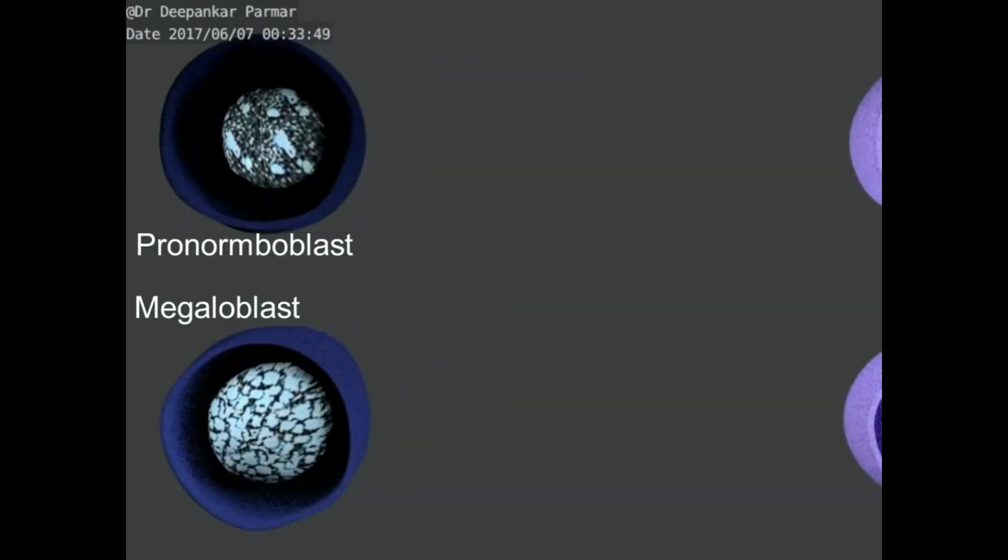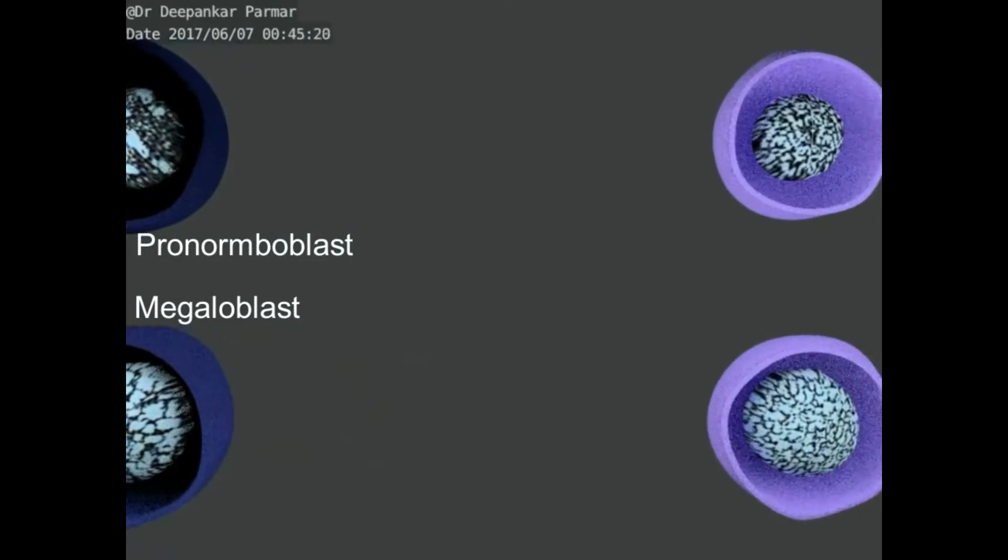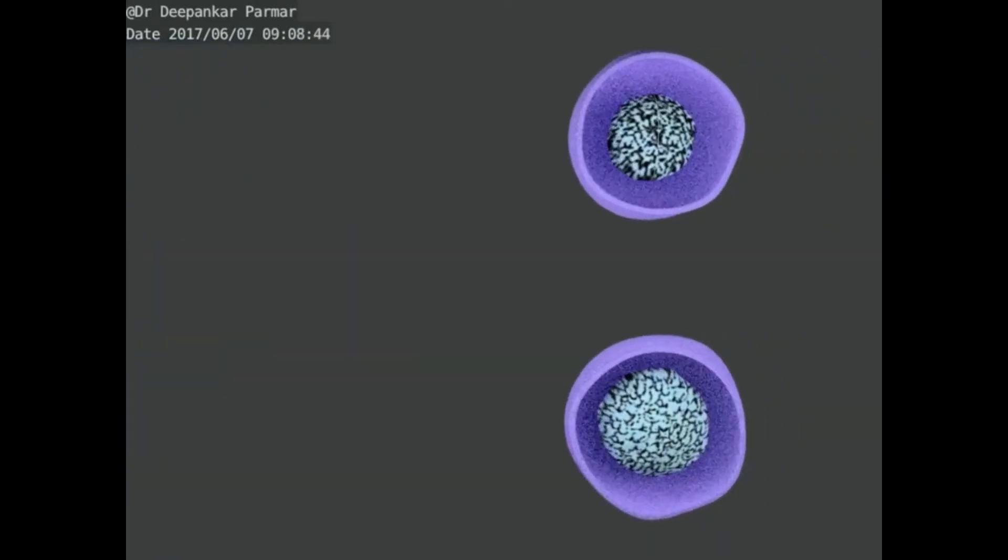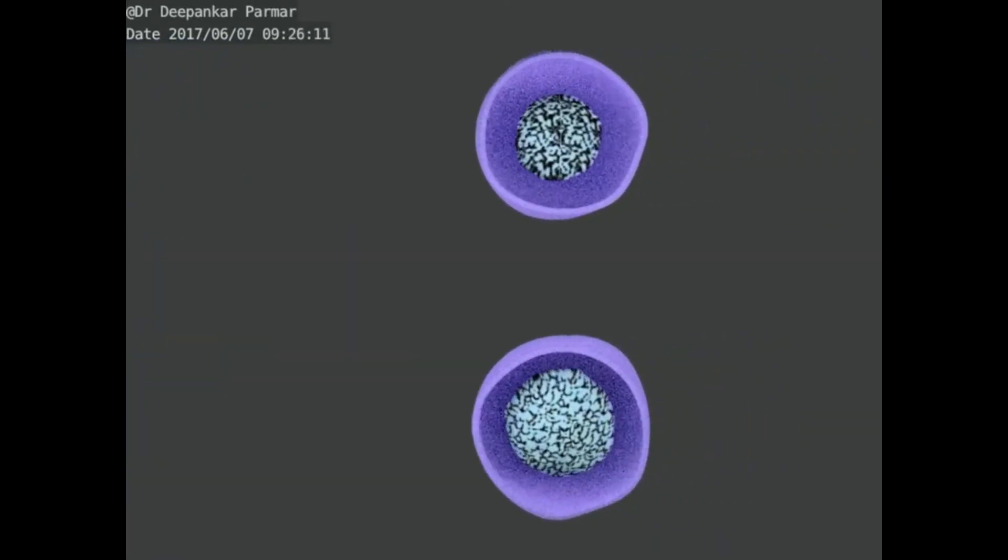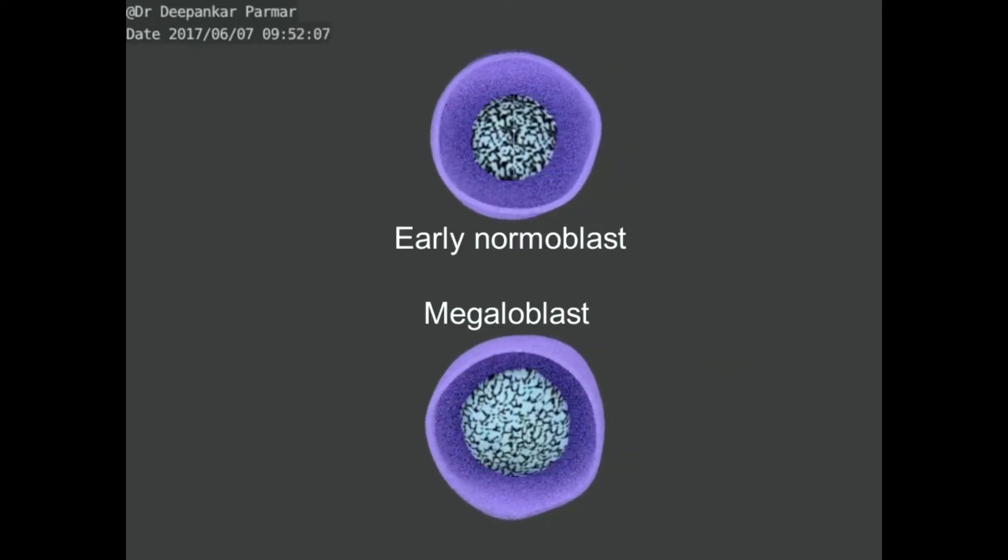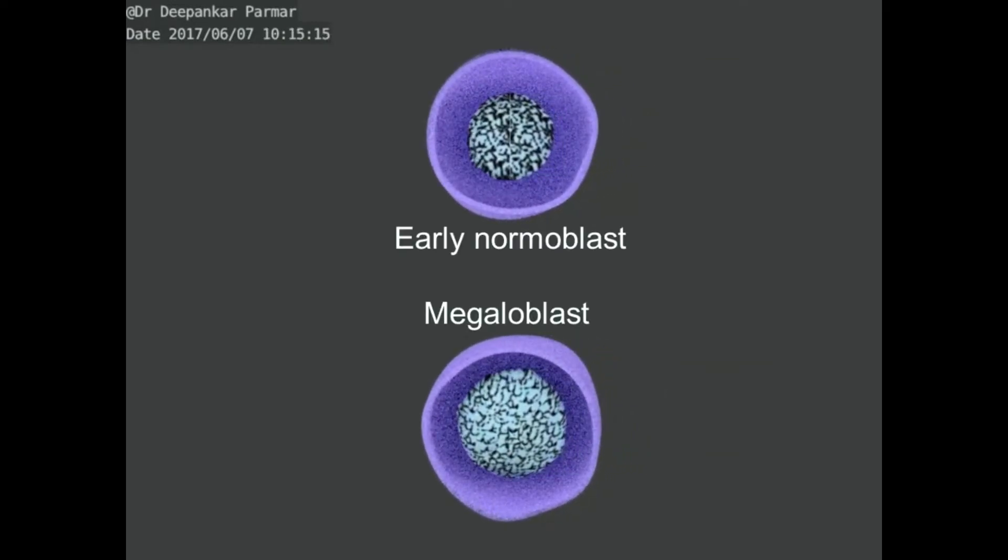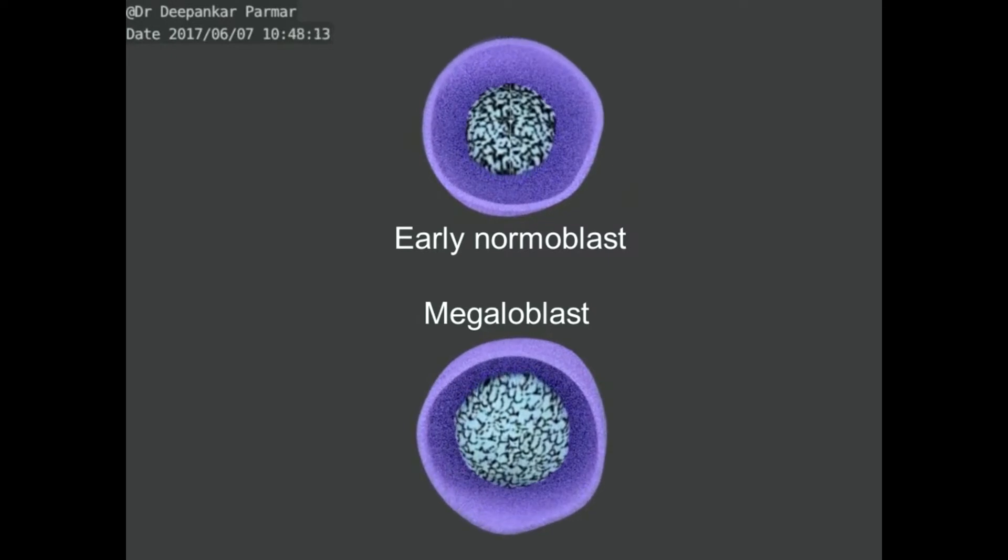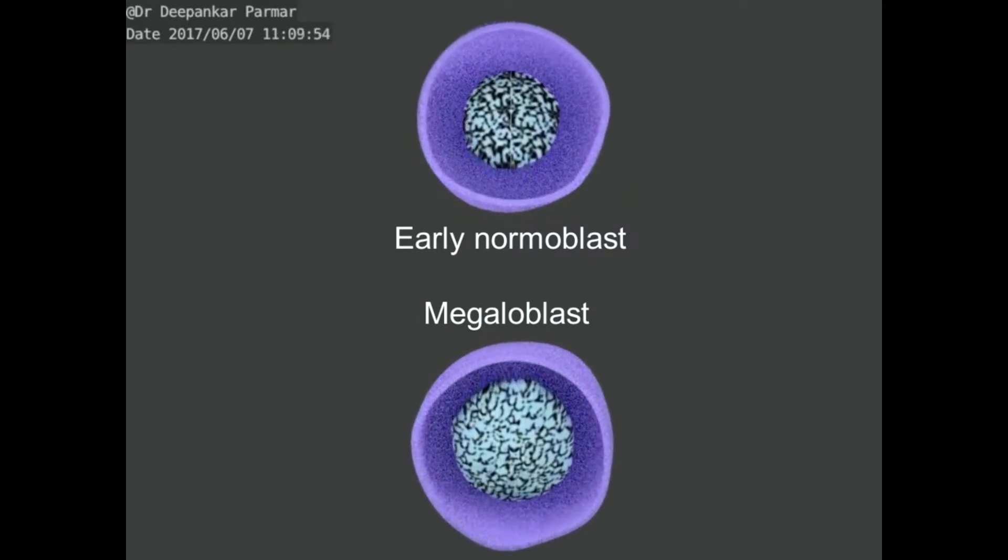Now, I will move camera to the right demonstrating the normal maturation of red cell precursors compared to those of a megaloblastic cell of the same stage. The normal is shown above and the abnormal is shown below.